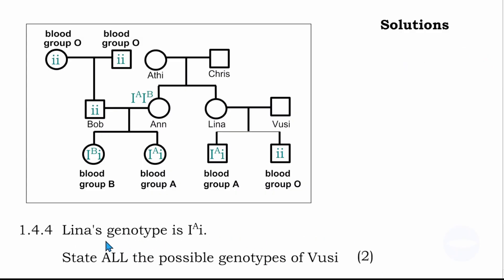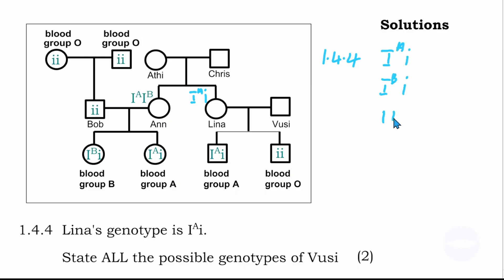The next question says Lina's genotype is blood type A, and asks to state all possible genotypes of VUCI. We will use their kids, because kids get one allele from father and one from mother. There is a kid with blood type O, meaning VUCI must have a small letter i, since the child received one small letter from each parent. Therefore, all possible genotypes we write must include a small letter i.